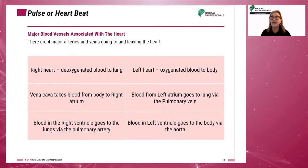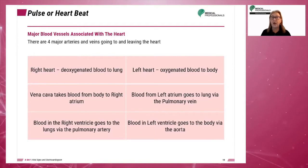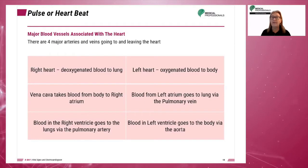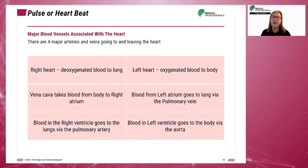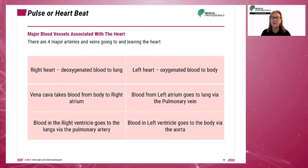The right vena cava carries deoxygenated blood from the body to the right atrium of the heart. The pulmonary artery carries deoxygenated blood from the right ventricle to the lungs. The left pulmonary vein carries oxygenated blood from the lungs to the left atrium. The aorta carries oxygenated blood from the left ventricle to the body.